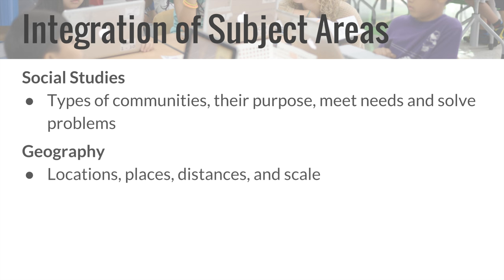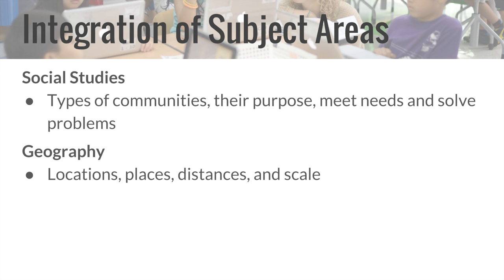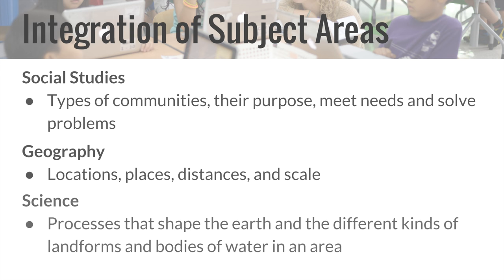In geography, our second graders studied locations, places, distance, and scale. In science, students learned about the processes that shape the earth — events that occur quickly or slowly, such as the change of land by wind or water — as well as the different kinds of landforms and bodies of water in an area. Here are some of the learning activities.